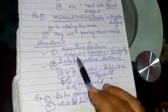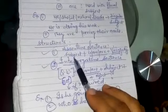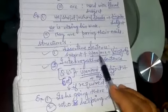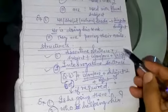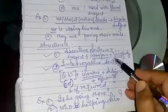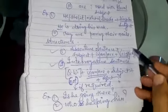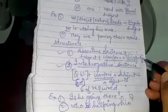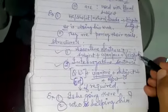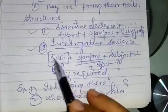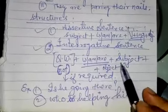The assertive sentence structure is: Subject + is/am/are + verb first form + ing + object. According to the rule, we write it this way. For an interrogative sentence, if a question word is present, we write the question word first, then the helping verb, then the subject.